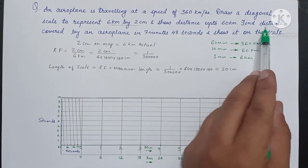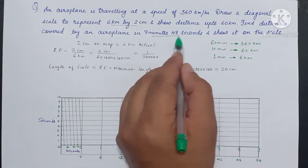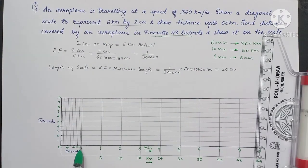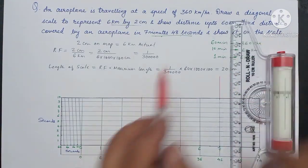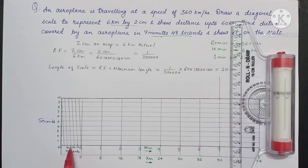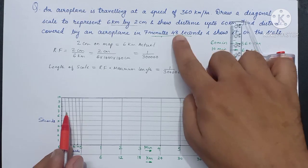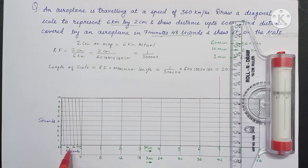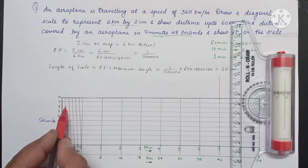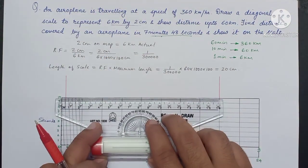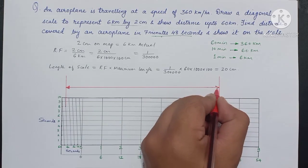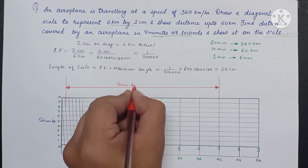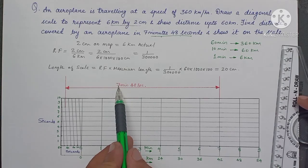Now to find the distance covered by the aeroplane in 7 minutes 48 seconds, first we will mark 7 minutes 48 seconds. From the zero point to the right hand side we get 7 minutes. From zero to the left hand side we have 40, then project this line and match it with 8 seconds to get a point. The line intersecting 40 and 8 gives us 48 seconds, so we have marked 7 minutes 48 seconds.